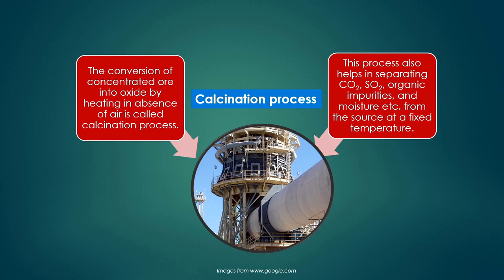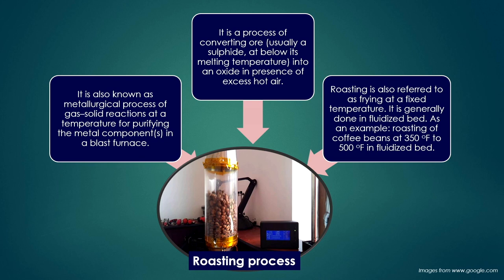Calcination is a solid-fluid operation involving conversion of concentrated ore into oxide by heating in the absence of air. This process also helps in separating carbon dioxide, sulfur dioxide, organic impurities, and moisture from the source at a fixed temperature. Roasting involves conversion of ore — usually sulfide — below its melting temperature into an oxide in the presence of excess hot air. It is a metallurgical process of gas-solid reactions at temperature for purifying material in a blast furnace.